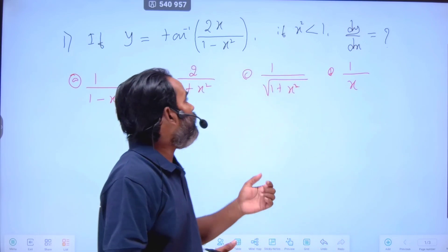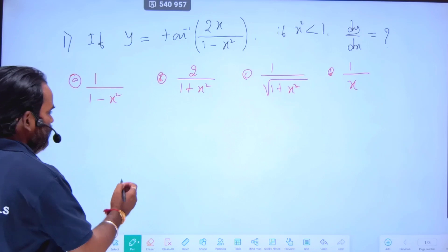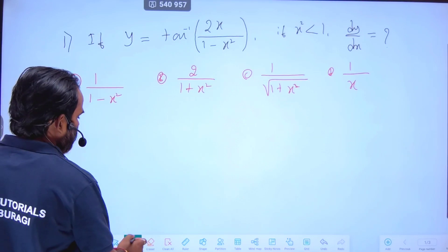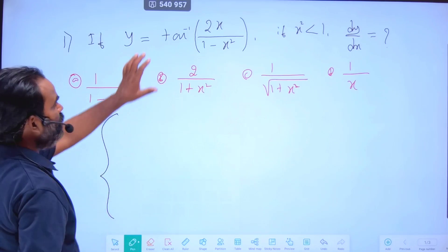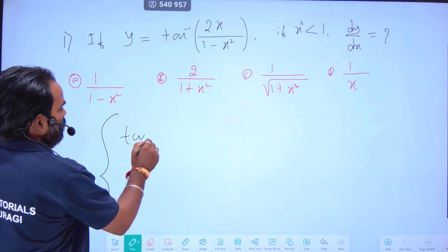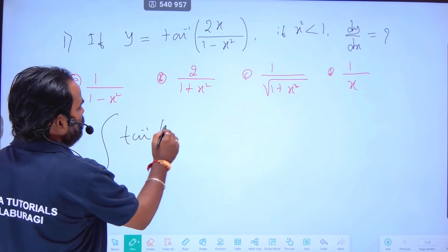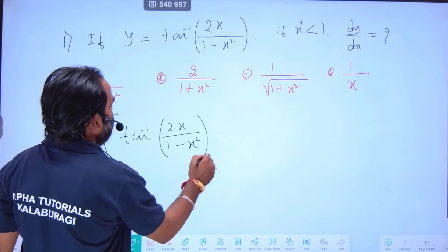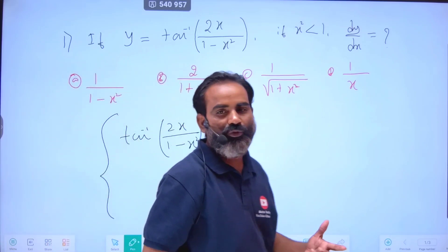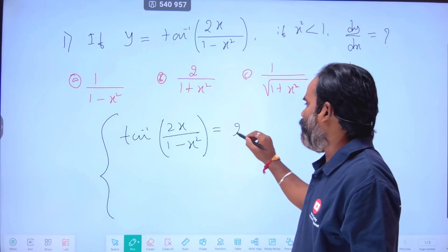For inverse trigonometric functions, this equals 2x divided by (1 minus x²). This is always equal to 2 tan inverse of x.